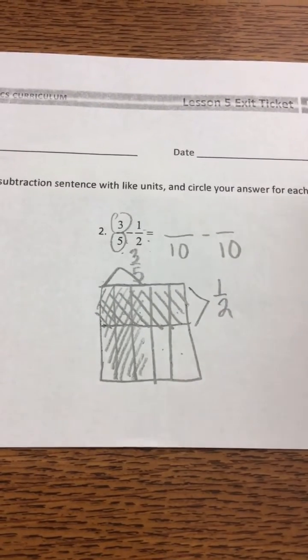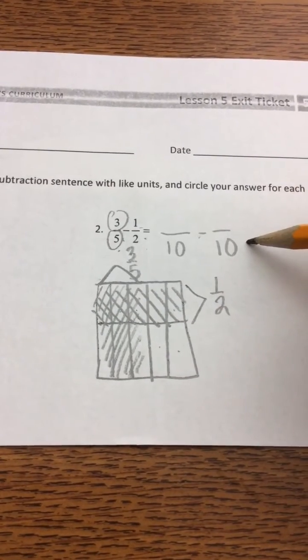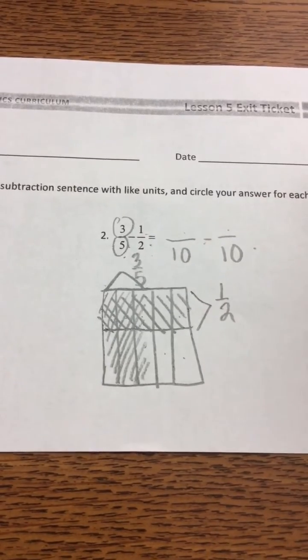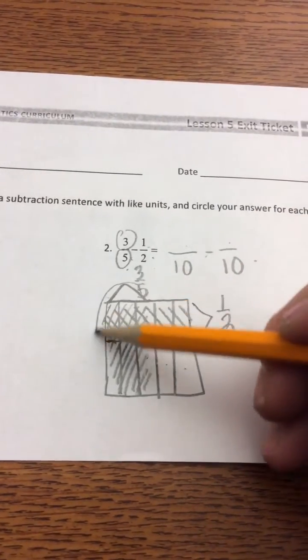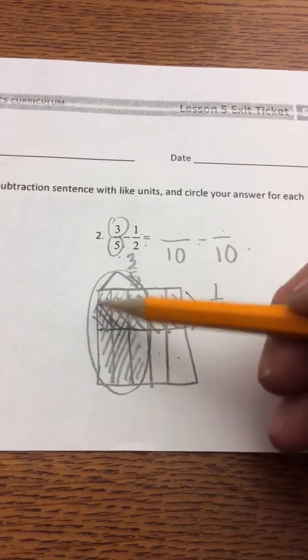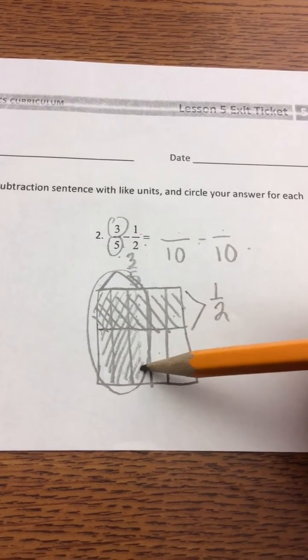Now I can write blank over 10 minus blank over 10 and fill in my numerators. 3/5 was this whole section here. There are 1, 2, 3 fifths.